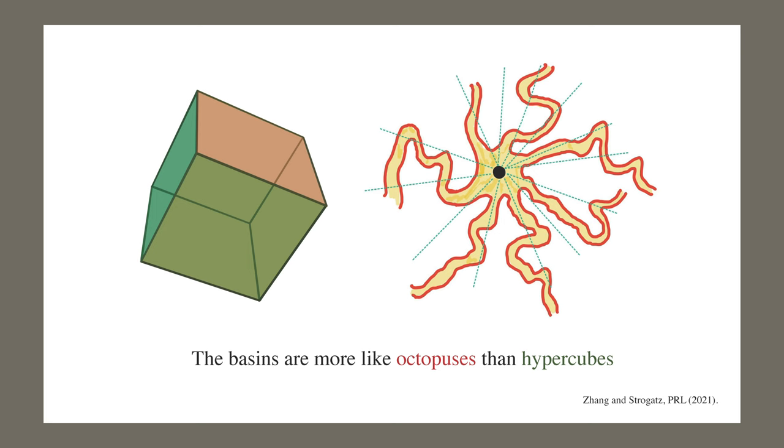We can detect those tentacles by shooting rays out of the local minimum and see if they intersect the basins at disjoint intervals. If a ray exits a basin at one point, but then returns to the same basin and do that over and over again, then that tells us that the basins have meandering tentacles like an octopus.